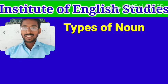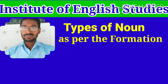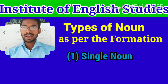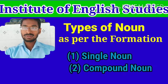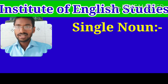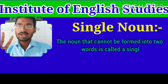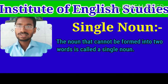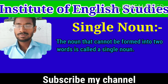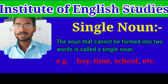Types of noun as per the formation: there are two types of noun as per the formation — single noun and compound noun. Single noun: the noun that can't be formed into two words is called a single noun. For example: boy, time, school, etc.